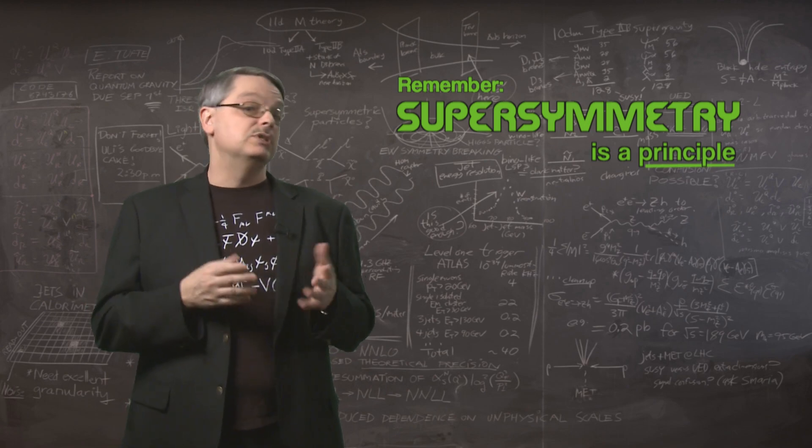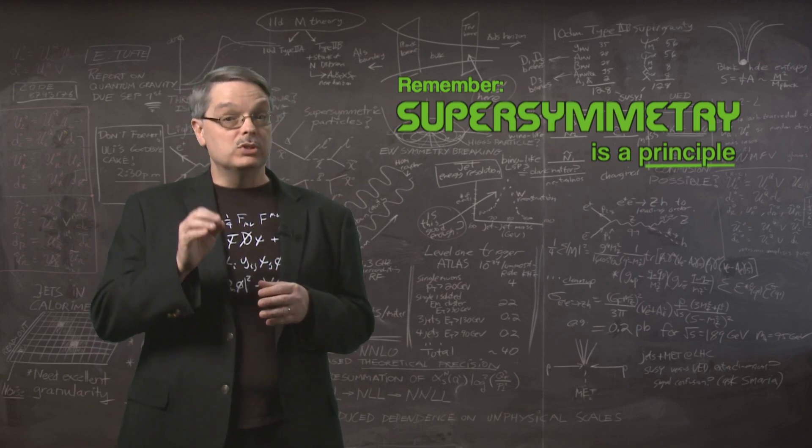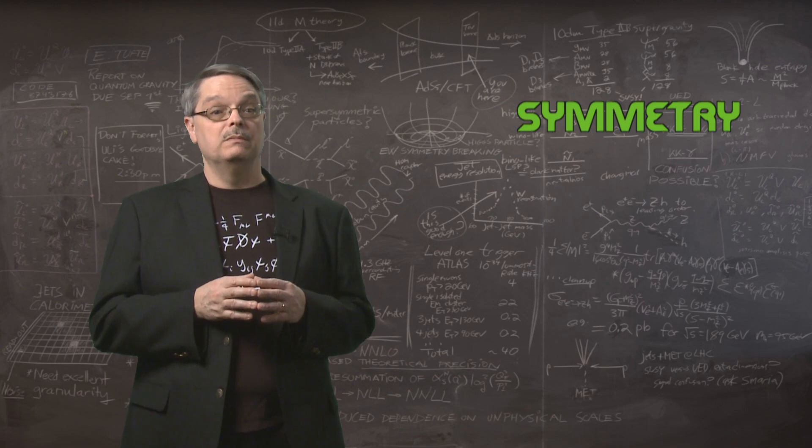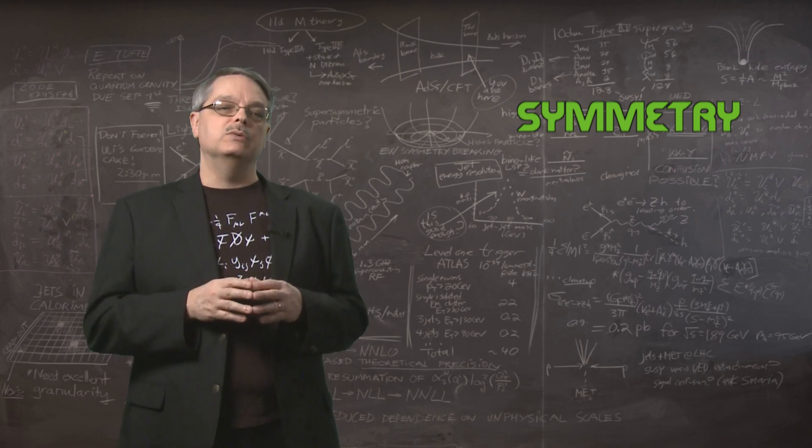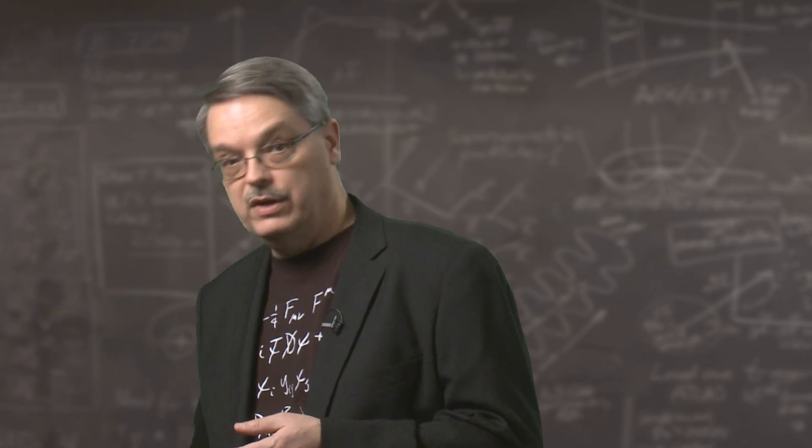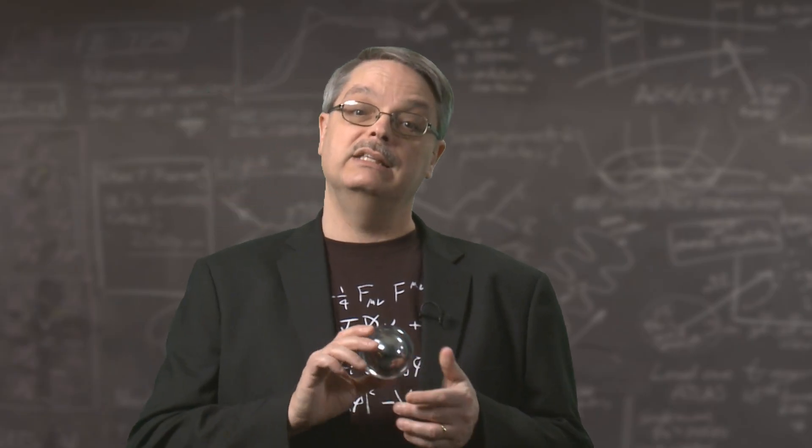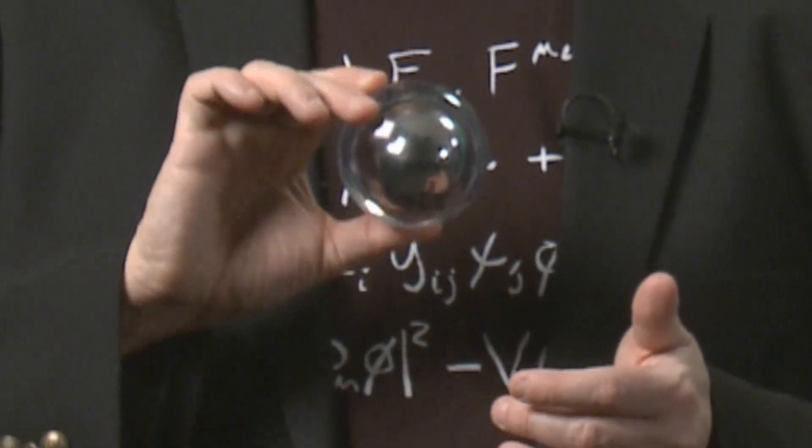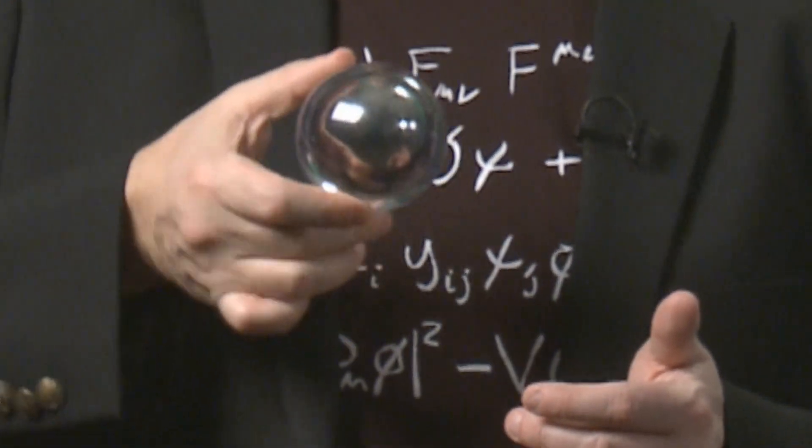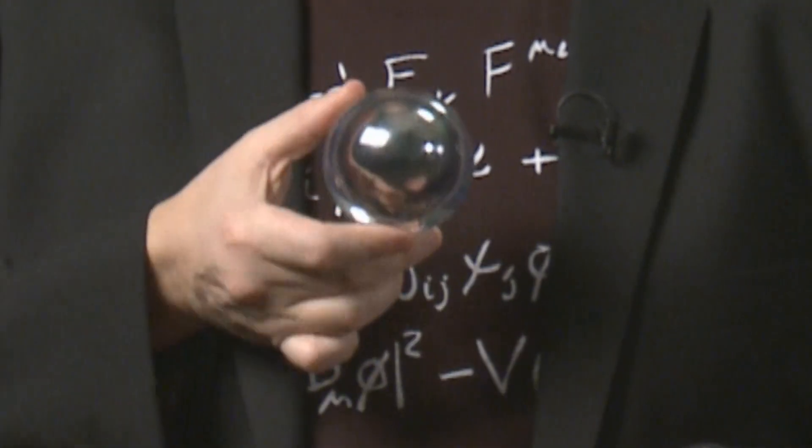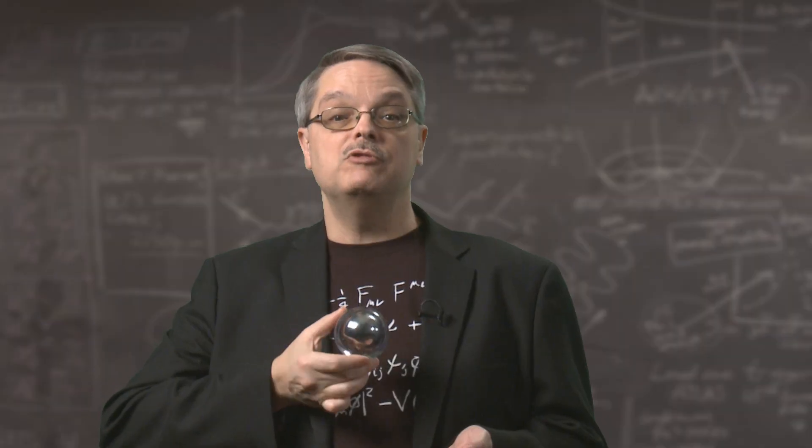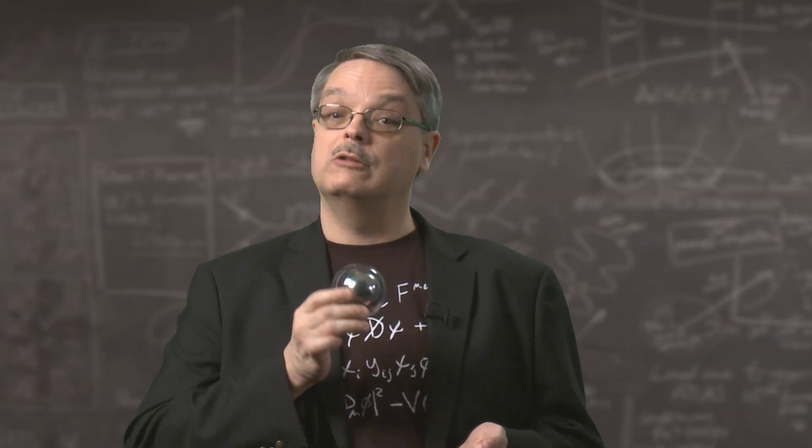So let's take a look at how supersymmetry shows up in physics. We'll start with the idea of symmetry. Symmetry has a common meaning, which can be illustrated by this sphere. Take a look at it as I rotate it around in every direction. No matter how much I twist it, the sphere looks the same. Symmetry means that if I make a change, the final result is the same.